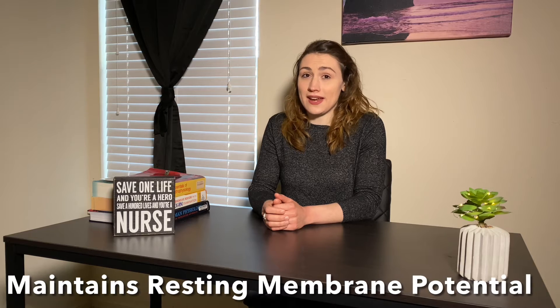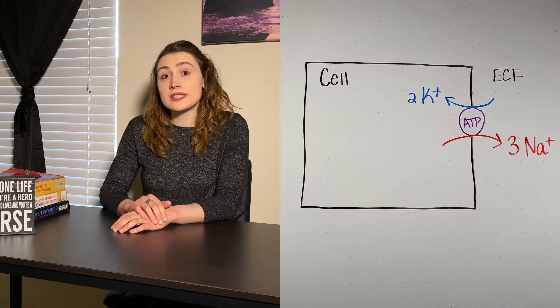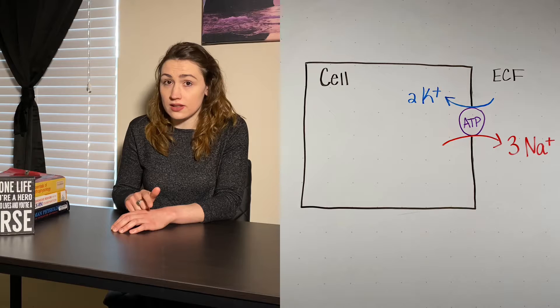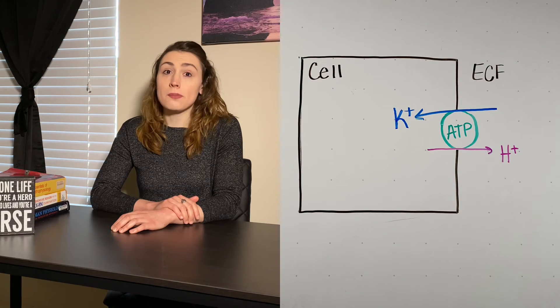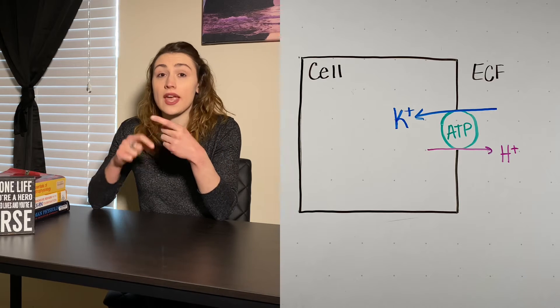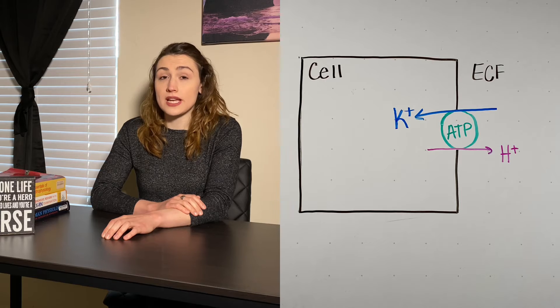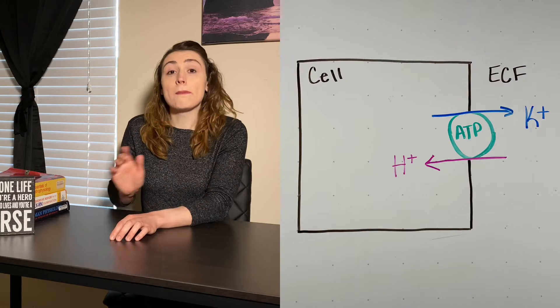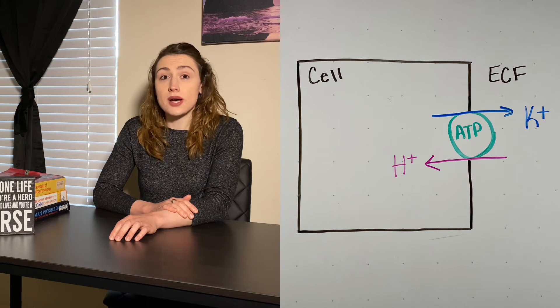Potassium is needed to maintain the resting membrane potential of nerve and muscle cells, and it also plays a big role in acid-base balance. On a cellular level, there are two specific pumps that regulate potassium: the sodium-potassium ATPase and the hydrogen-potassium ATPase. The sodium-potassium pump transfers three sodium ions out of the cell for every two potassium ions it transfers into the cell, and this pump can be found in the kidneys and in normal cells. The hydrogen-potassium pump moves potassium and hydrogen in opposite directions, and it can move potassium either into or out of the cell, but whichever way potassium is moving, hydrogen must go in the opposite direction.